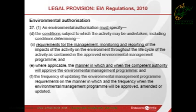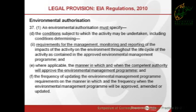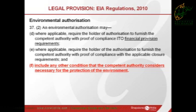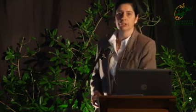The regulations also talk about the conditions that a competent authority may impose in an environmental authorization. Interesting here is Section E, which specifies where applicable the manner in which and when the competent authority will approve the EMP. This could talk to biodiversity offset programmes that are perhaps not fully fledged when a decision is taken. And quite broadly, any other condition that the competent authority considers necessary for the protection of the environment — so again we have this very broad provision that would allow for, and certainly doesn't prohibit, biodiversity offsets.